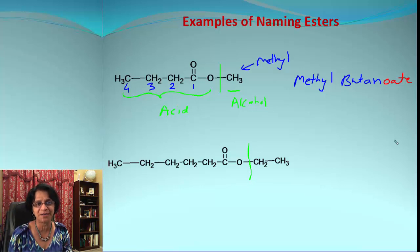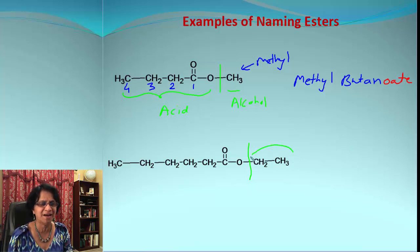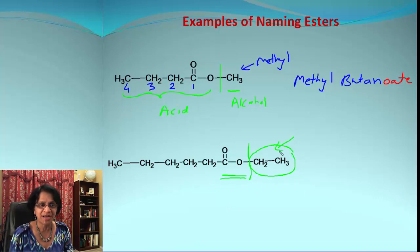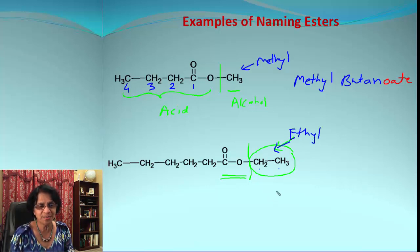Let's work on the next one. The very first thing we are going to do is split that molecule into two parts. When splitting, make sure you get that alkyl group away. The alkyl group here has two carbon atoms, which means it will be an ethyl group.